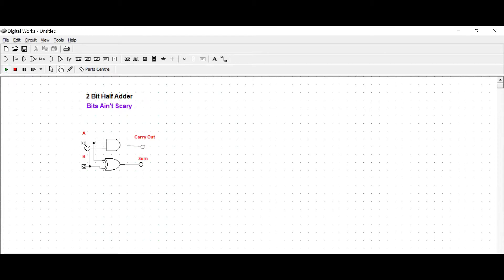And we can test the results. So 0 plus 0, no LEDs are lit up. 1 plus 0, we get a sum of 1. 0 plus 1, we get a sum of 1. And 1 plus 1, we get a carryout of 1, which is equal to 2.